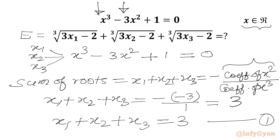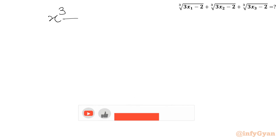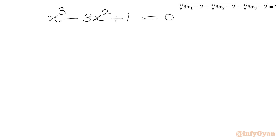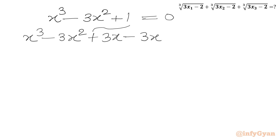Now we will write our cubic equation x³ - 3x² + 1 = 0 and use an algebraic manipulation step. I need to write x³ - 3x² as it is, then add and subtract 3x (so net zero change), and in place of 1 write 2 - 1.